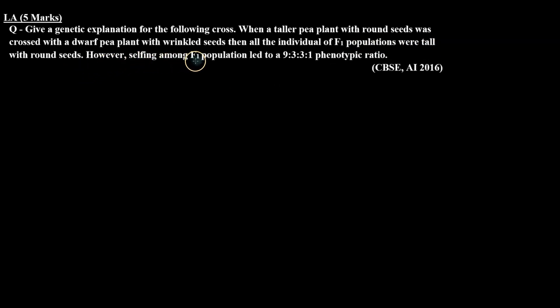However, selfing among F1 population led to a 9:3:3:1 phenotypic ratio. So in this question, when we cross a tall pea plant with round seeds with a dwarf pea plant with wrinkled seeds, all F1 are tall with round seeds. After selfing, we get a phenotypic ratio of 9:3:3:1.